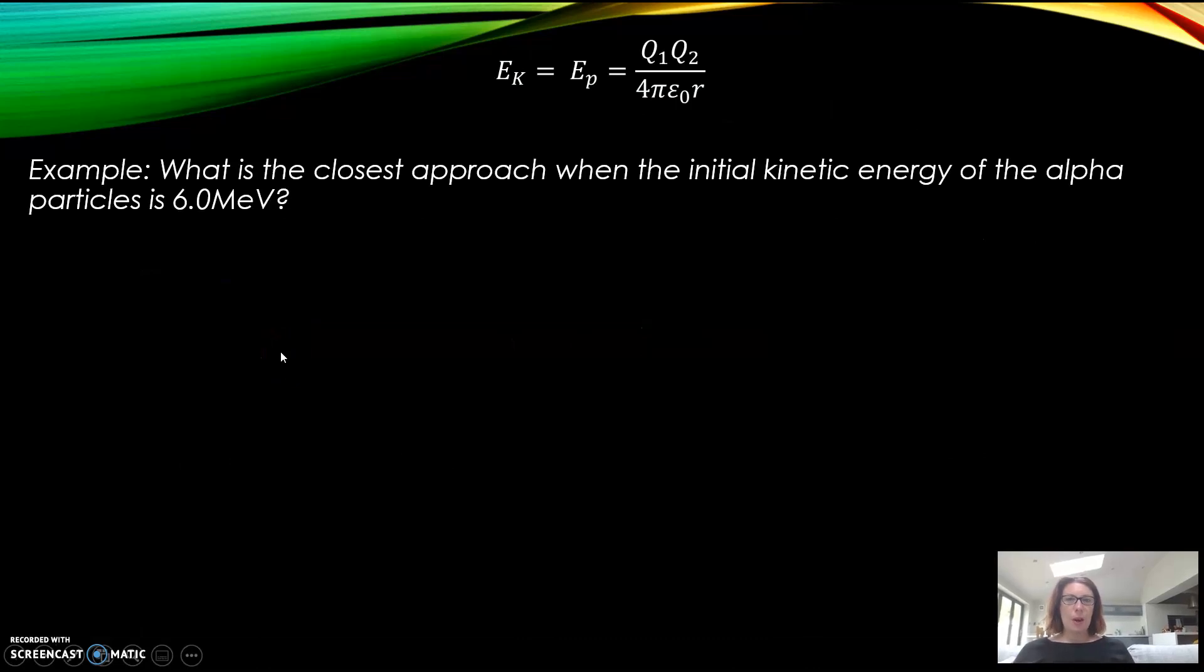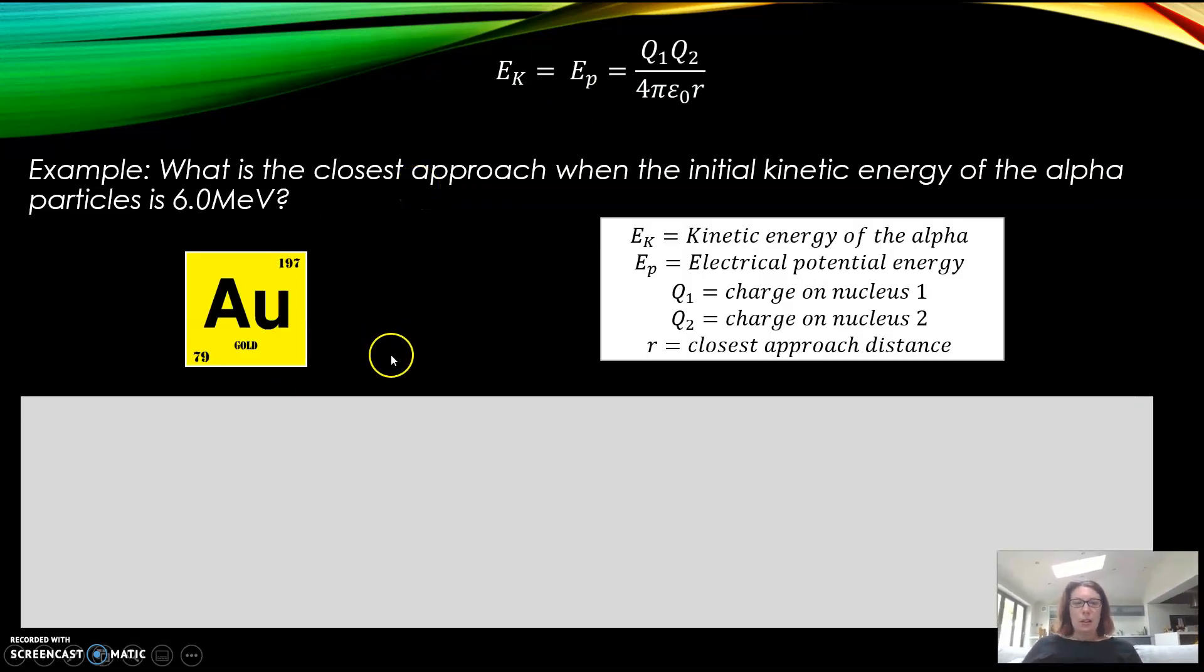Let's have a look at how we would work this out. Number one: kinetic energy is in mega electron volts so I need to convert that to joules first. Mega electron volts is 6 times 10 to the 6, so we've got 6 times 10 to the 6 times the charge of the electron which is 1.6 times 10 to the minus 19. Multiply them together, get my answer in joules.